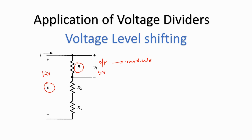The drop across that resistor should be 5 volts, so I can design R1, R2 and R3 accordingly. This is one application of voltage dividers. They are also used for power supply regulation, signal attenuation — for example, reducing the amplitude of an output from a high-amplitude input — and they are used majorly for biasing transistors.